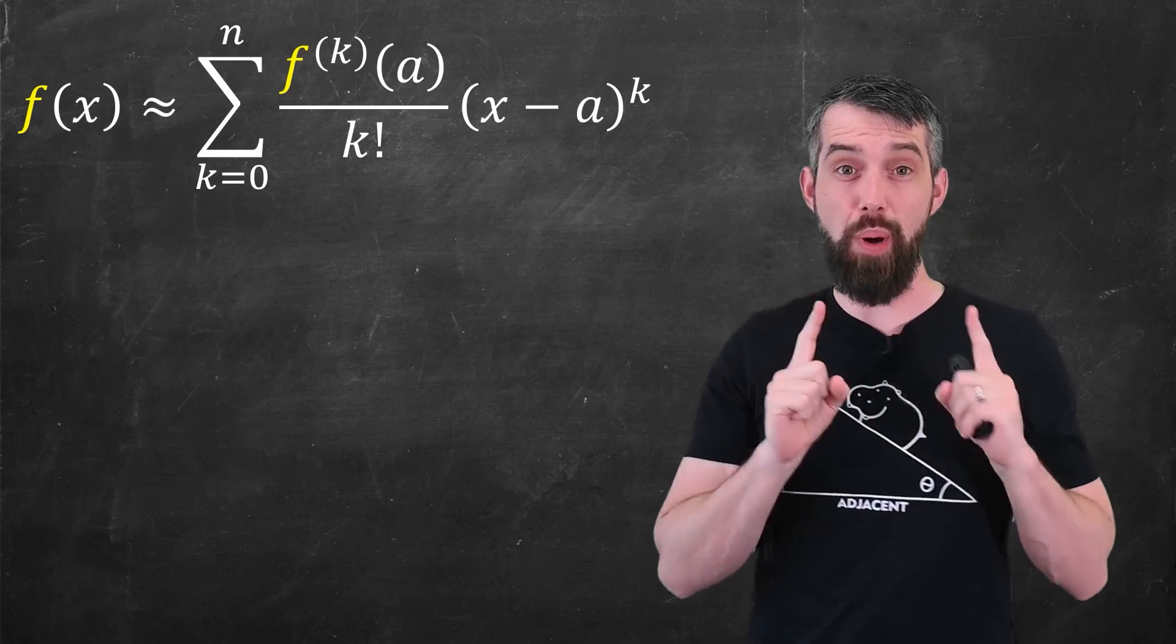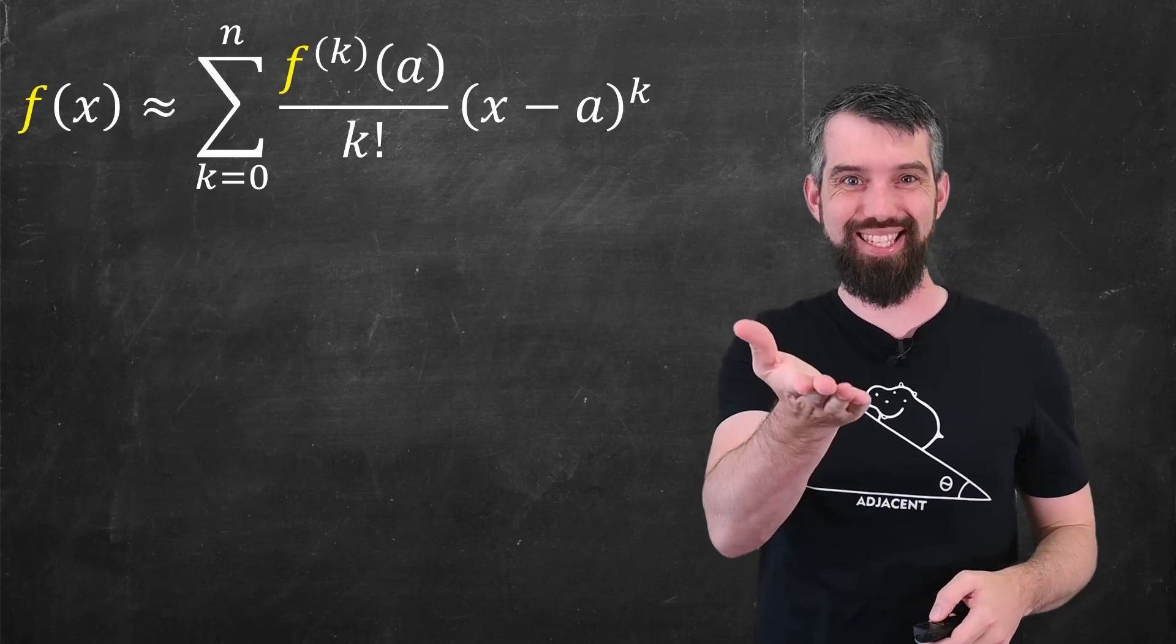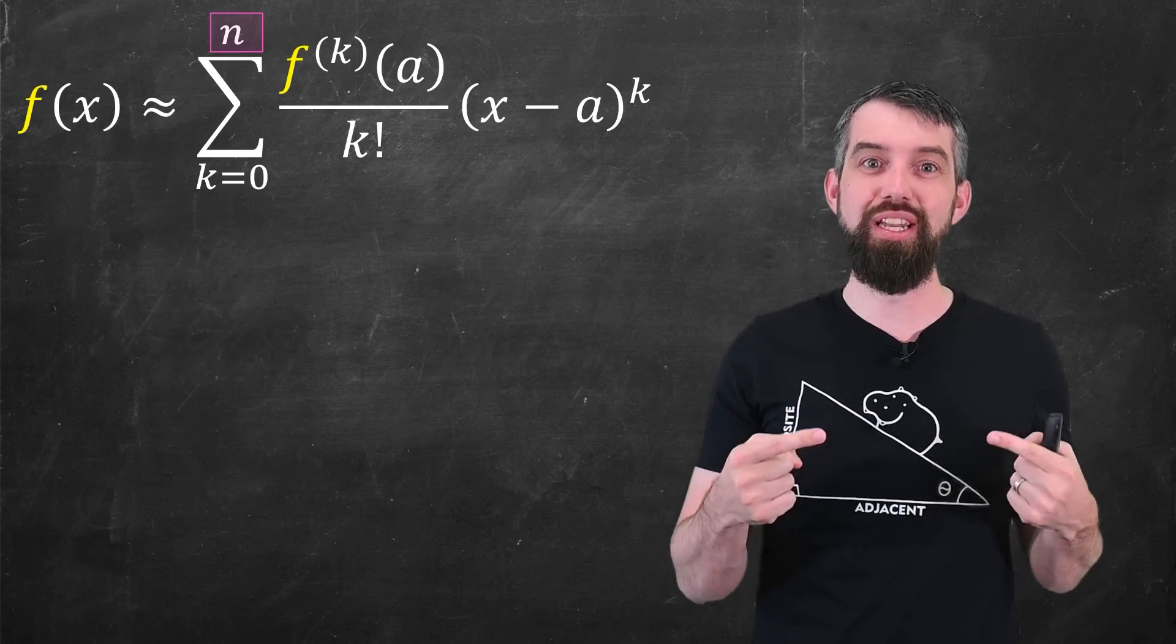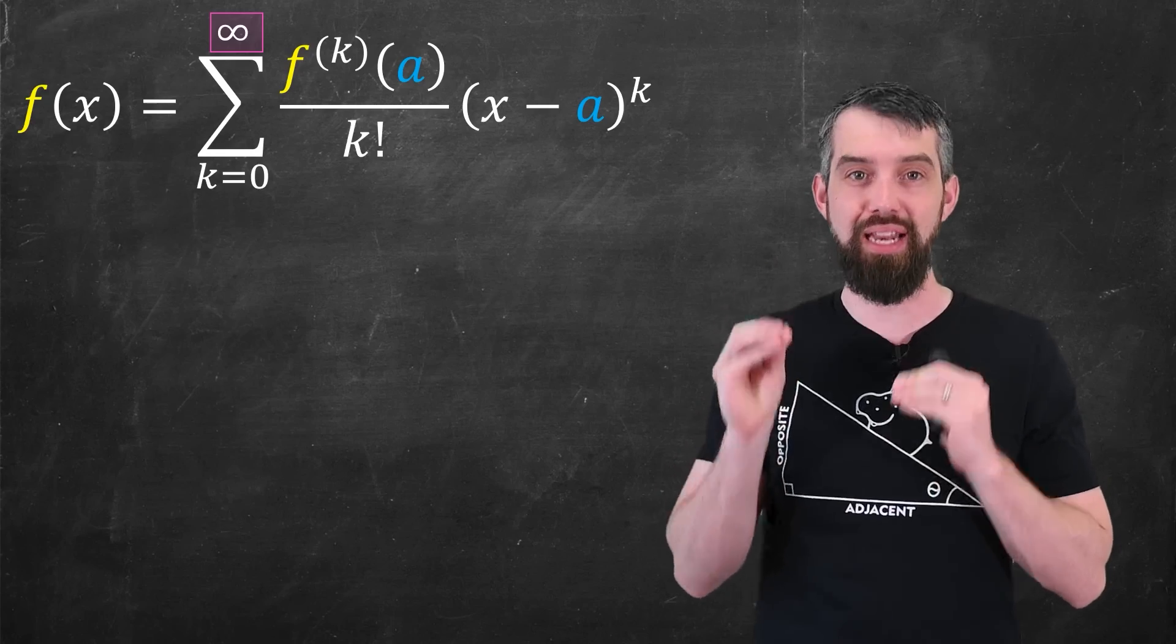So then, if this is the Taylor polynomial where I am approximating my function, where it's a sum up to some particular value n, then the question is, when can I turn this approximation into an equality by taking the finite sum and making it an infinite series?